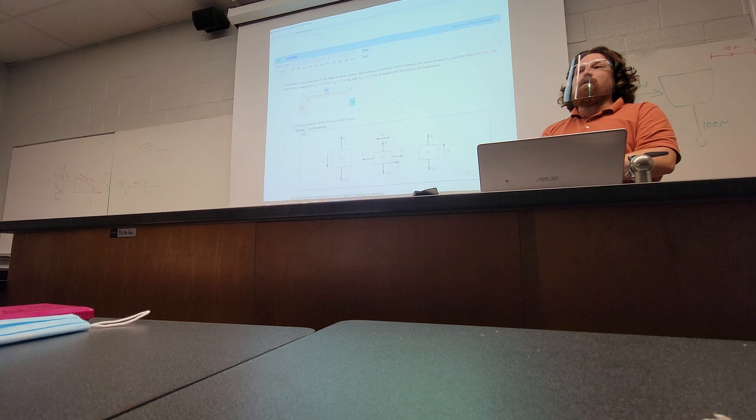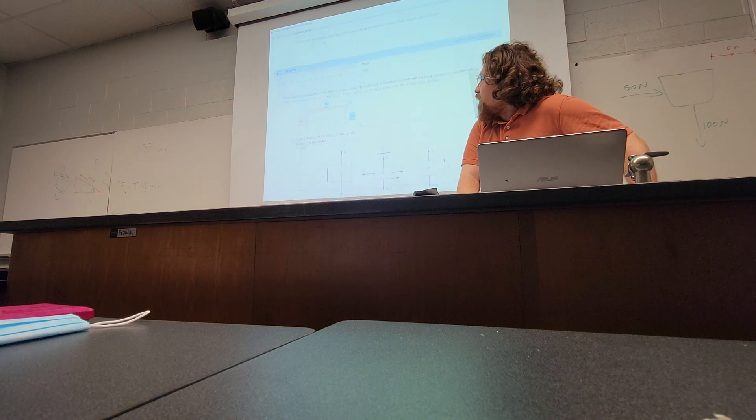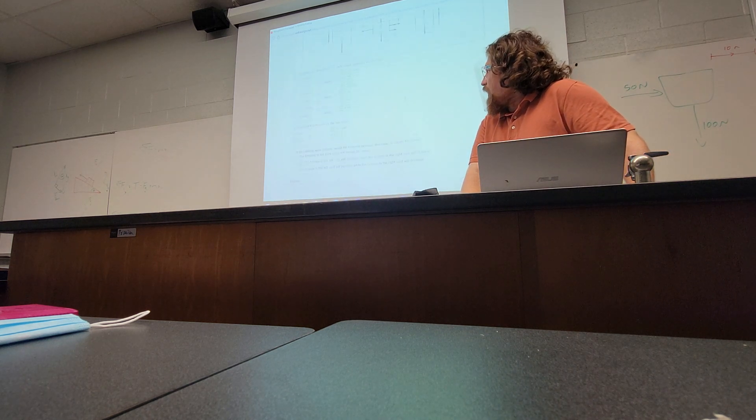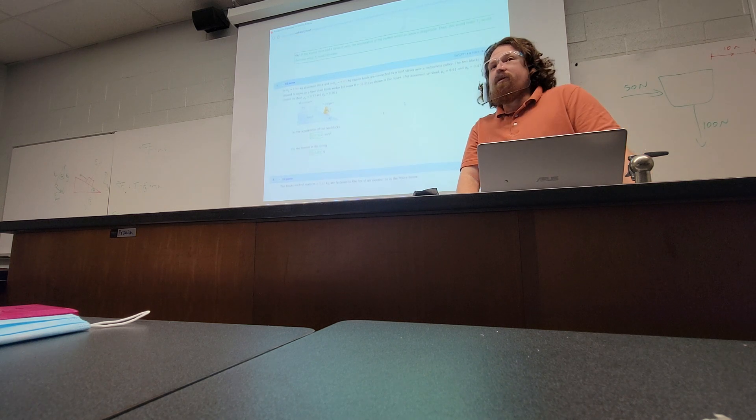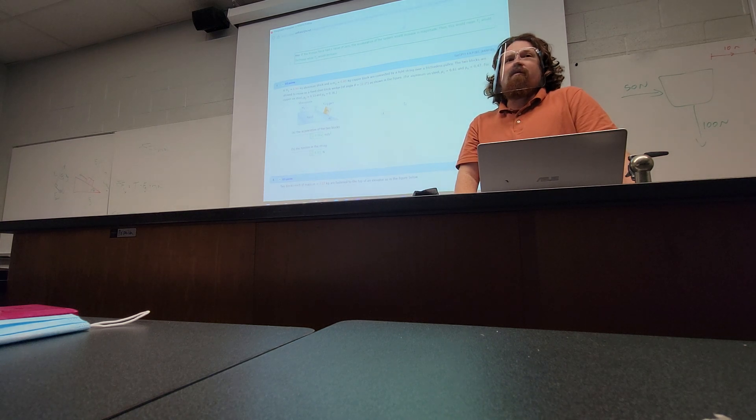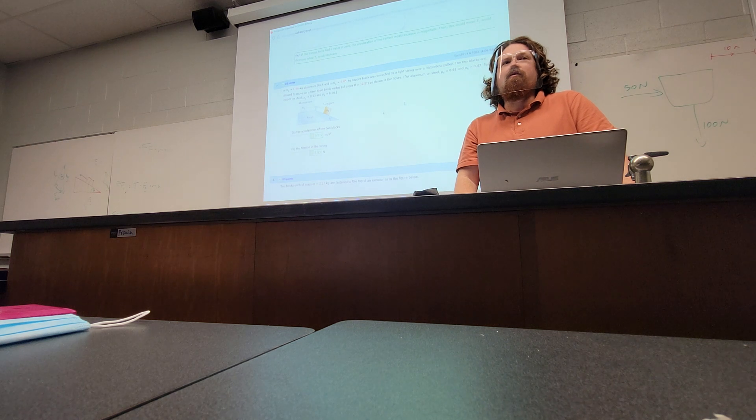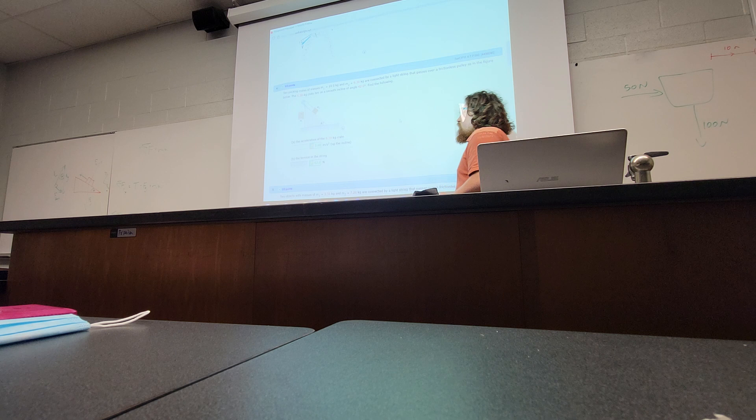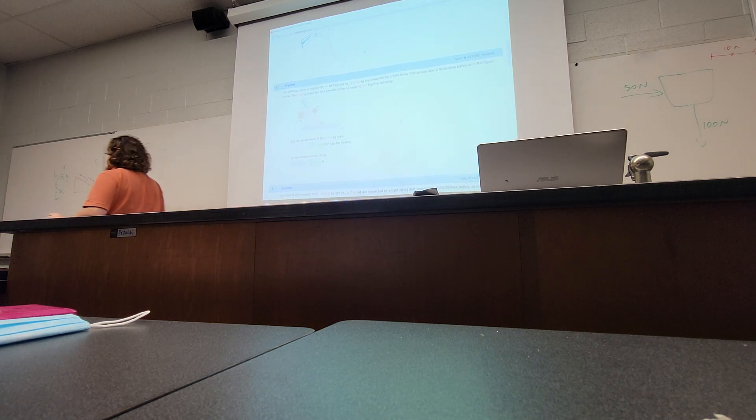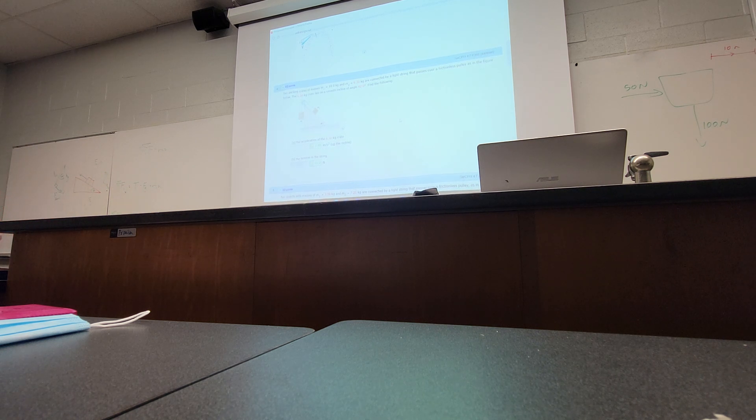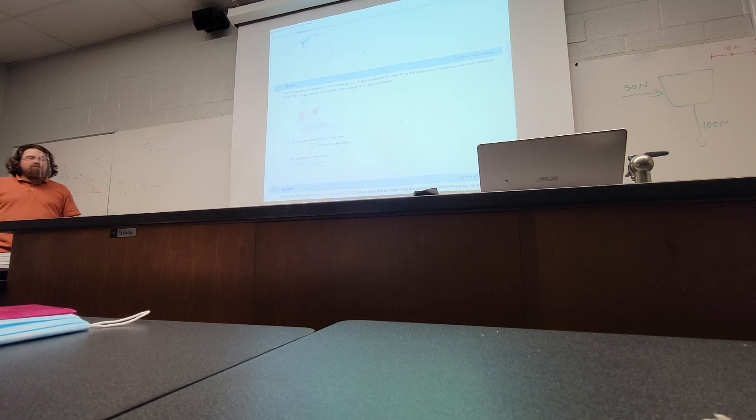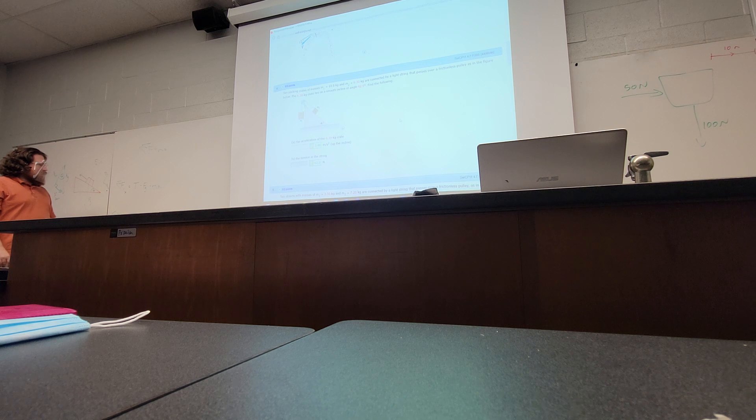Yes? Problem 4. Which one is 4? Ah, yes. So, 4 actually also has a similar setup to some of the other ones we've been looking at. I'd say the one it's most close to would be 7. It's probably easier than 7, in that one of the objects is hanging vertically downwards, so there's fewer forces on it, and there's also no friction. So there's fewer things to keep track of here.